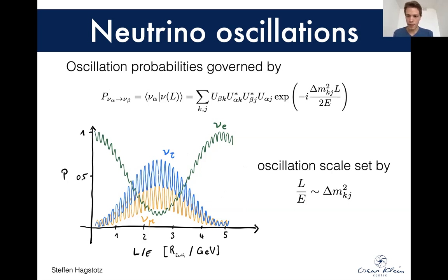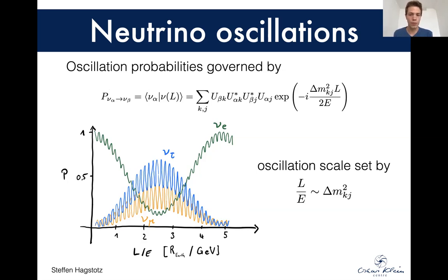I made this little sketch to show you what happens if you start with an electron neutrino and just let it propagate — slowly you develop these muon and tau flavors. Just note that the axis here is given in Earth radii over GeV, so you have to let the neutrino propagate for quite a while to actually watch it turn into a different flavor.